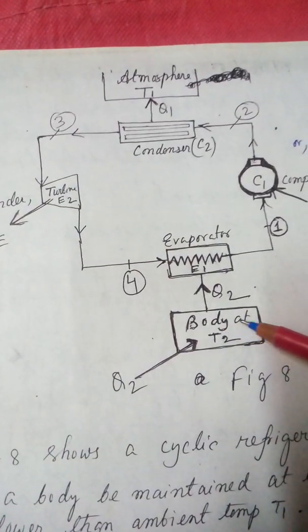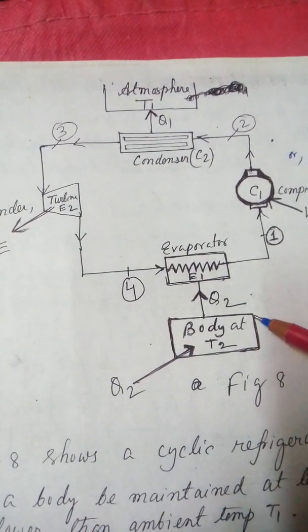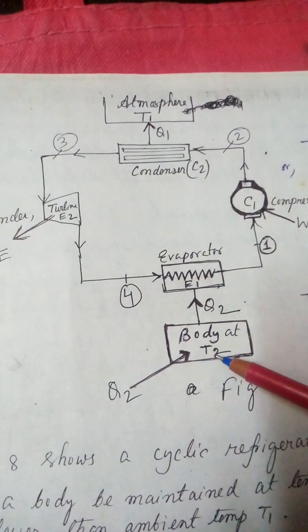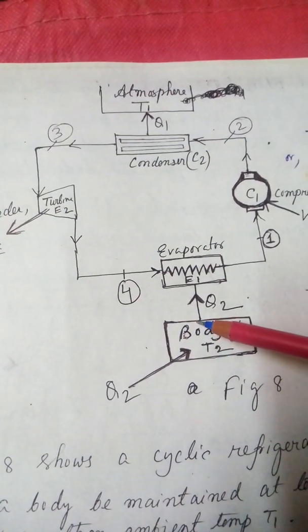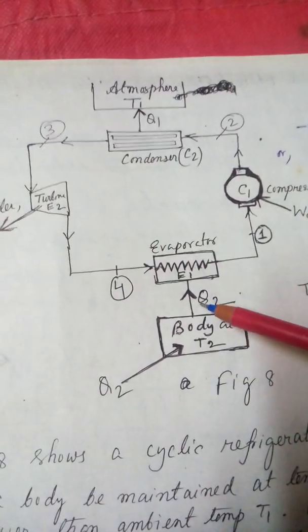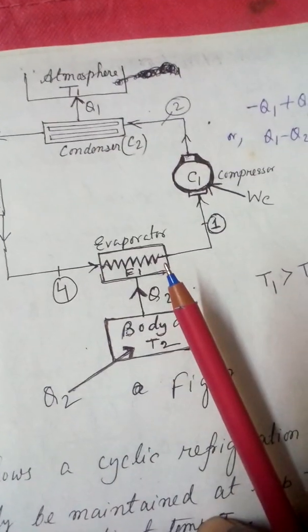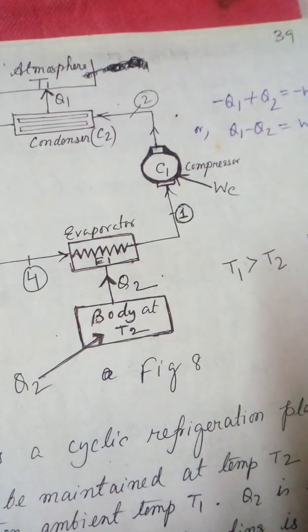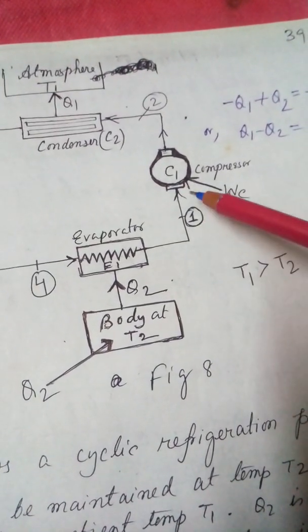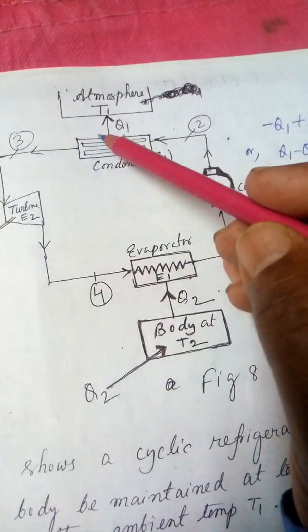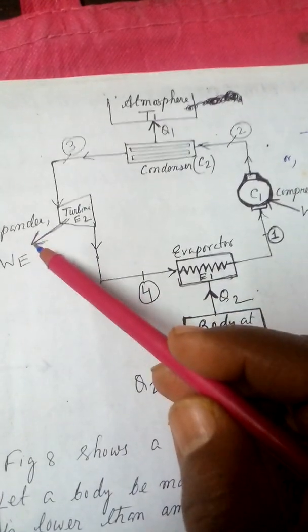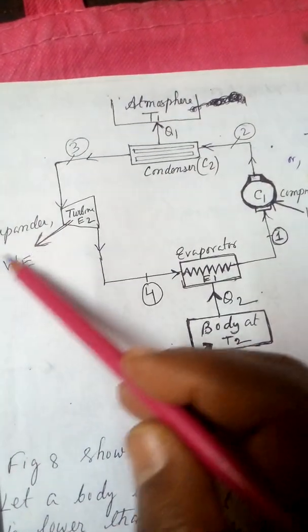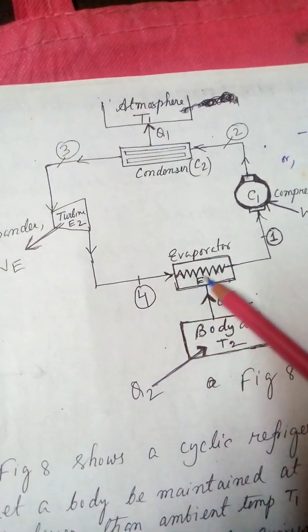This is a body at temperature T2 — suppose this is a refrigerator with fruits at a lower temperature. The atmospheric temperature is T1. The refrigerant evaporates in the evaporator, so heat Q2 is taken out from the body. It is then compressed by the compressor, goes to the condenser where heat is rejected to the atmosphere. Then it passes through the turbine or expander, which expands the refrigerant, and work is done by the turbine. Then it returns again to the evaporator.